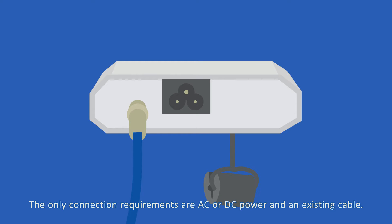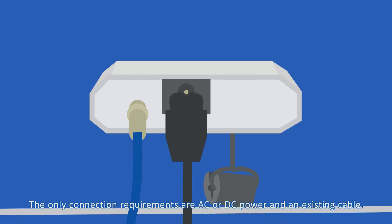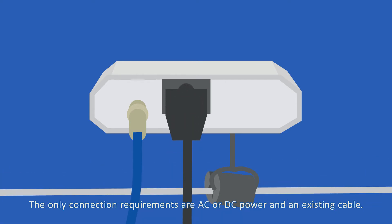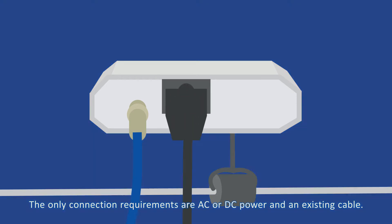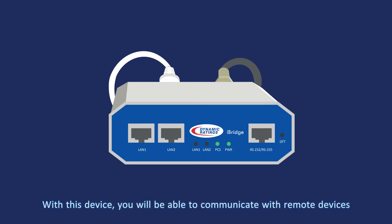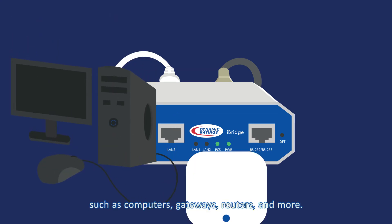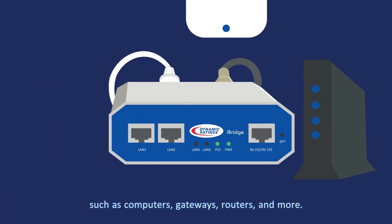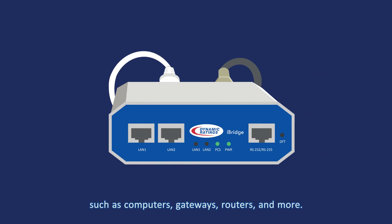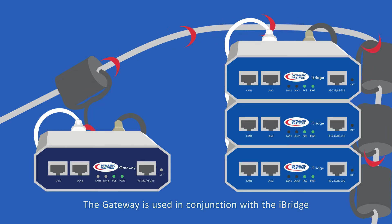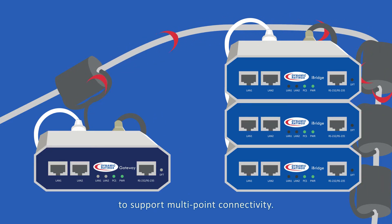The only connection requirements are AC or DC power and an existing cable. With this device, you will be able to communicate with remote devices such as computers, gateways, routers, and more. The gateway is used in conjunction with the iBridge to support multi-point connectivity.